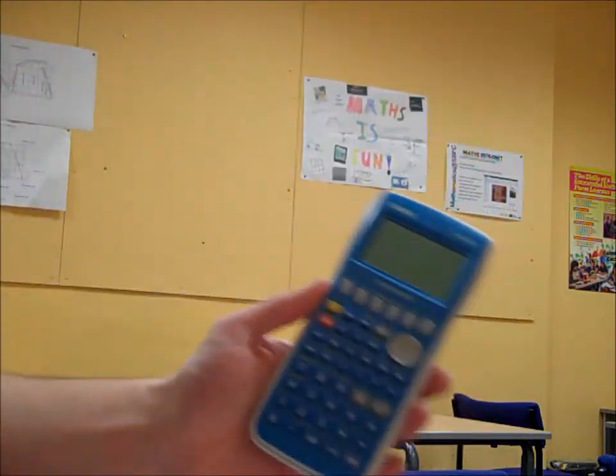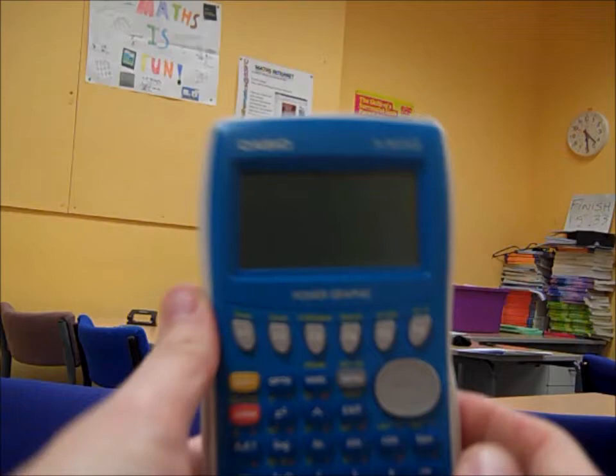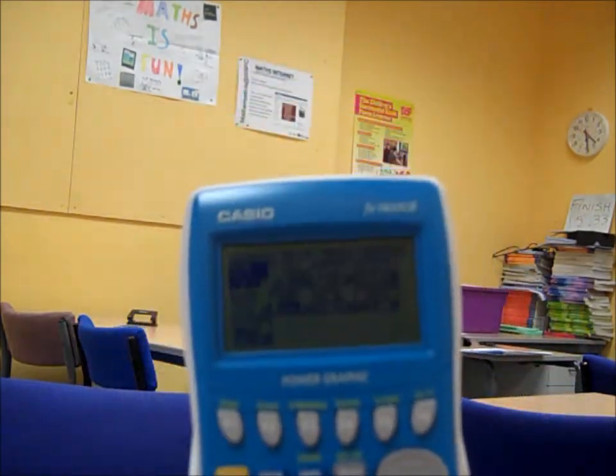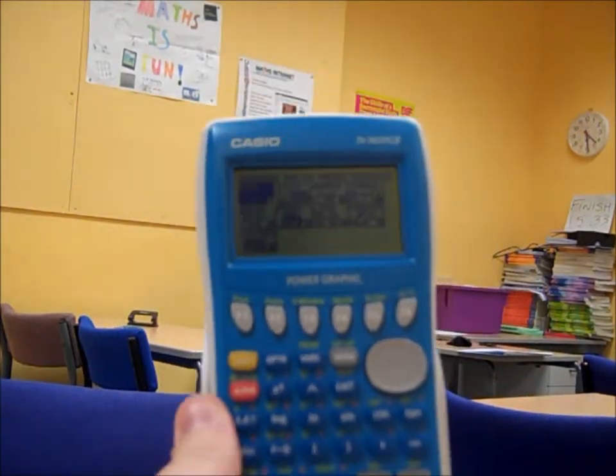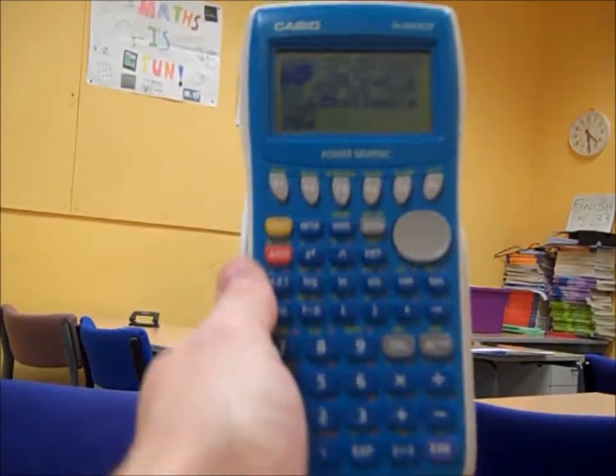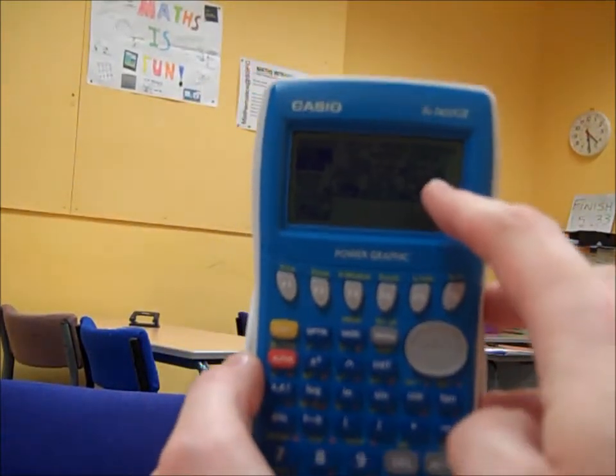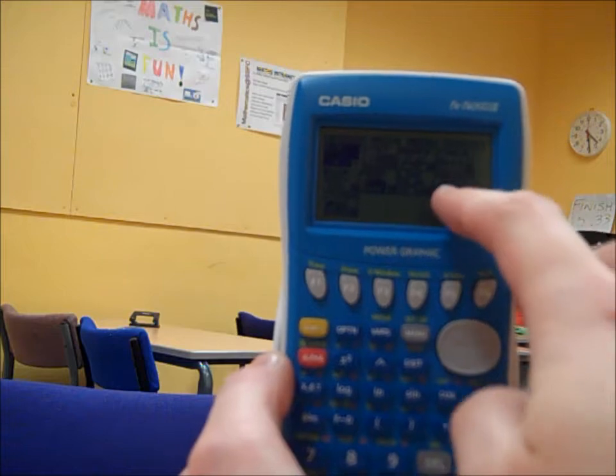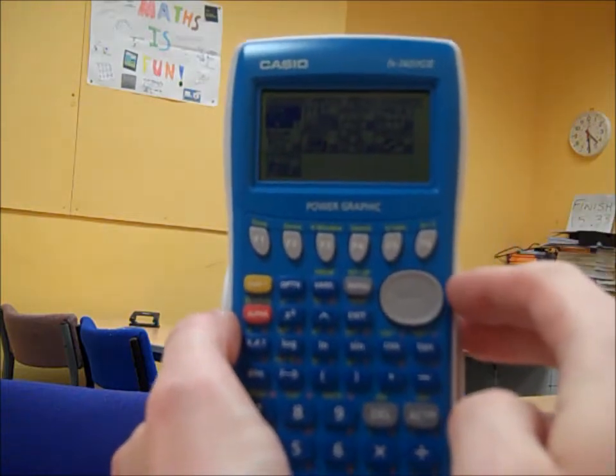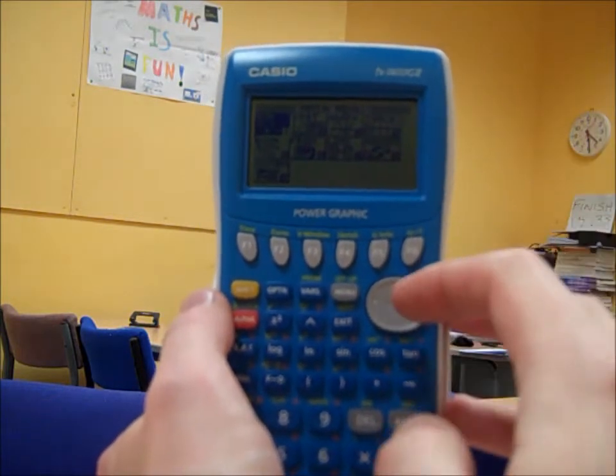Right. Shall we turn it on? So, here we go. We've got the main menu on this Casio. You'll notice, if you're familiar with the 9750G2, that we have fewer things up here to work with, fewer options. We seem to be missing things like the dynamic graphing one.